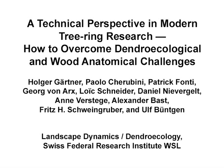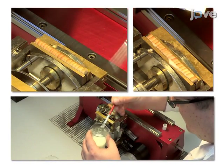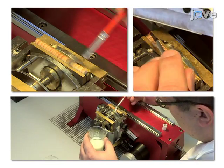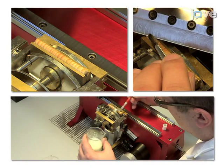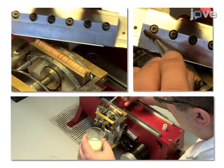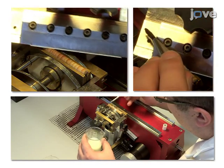The overall goal of the following experiment is to generate well-replicated and highly resolved wood anatomical datasets to study the effects of time and environmental factors on tree and shrub growth. This is achieved by using a non-Newtonian fluid to stabilize the plant cells during microtome sectioning, allowing a detailed microscopic analysis of the samples.